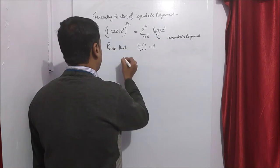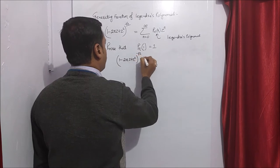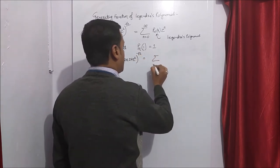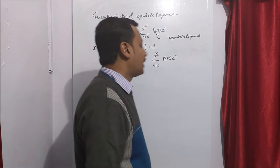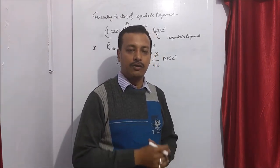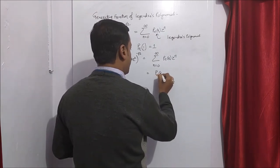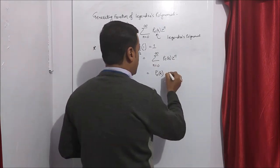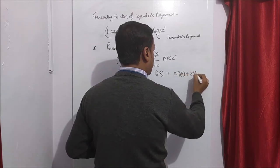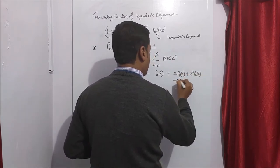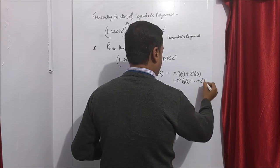So we can write 1 minus 2xz plus z squared to the power minus half is equal to summation n equals 0 to infinity Pn(x) z to the power n. Now plugging in values n equals 0, 1, 2, 3, we can write the first term as P0(x) z to the power 0, which equals 1, plus z P1(x) plus z squared P2(x) plus z cubed P3(x), and similarly the nth term z to the power n Pn(x).